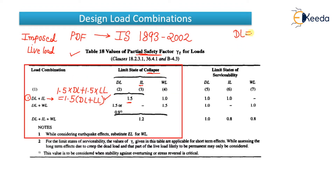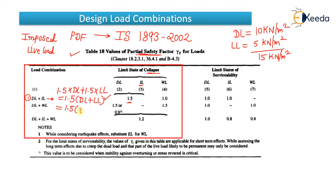For example, if the dead load over the structure is 10 kN/m² and the live load is 5 kN/m², the total is 15 kN/m², but you will not use 15 directly. Instead, you use the combination: 1.5 × (dead load + live load) = 1.5 × (10 + 5) = 1.5 × 15. That is how you apply the combinations.